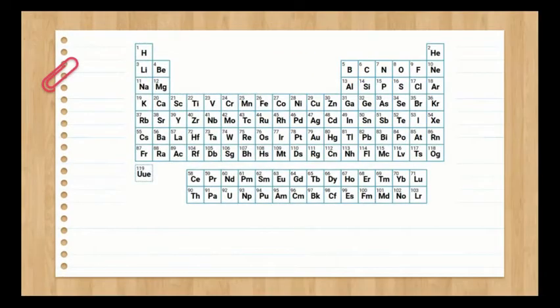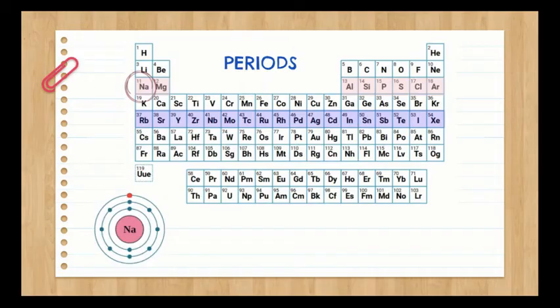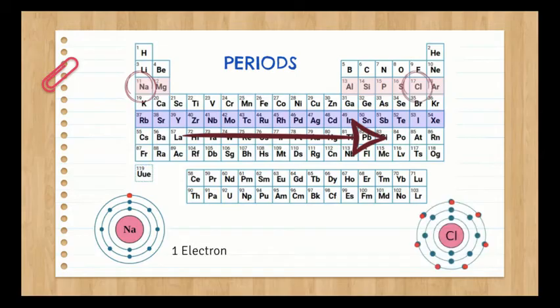Elements in the same row across are called periods, and just the way Mendeleev designed it, there is a reason on a molecular level. Each element is made of shells and these shells have electrons on them. As you move across the periodic table, the number of electrons on the outer shell increases. For example, sodium has one electron on its third outer shell. However, chlorine further down is in the same period with the same number of shells but has seven electrons on its outer shell.